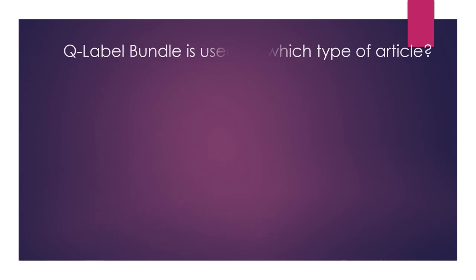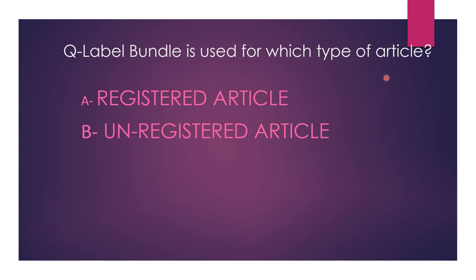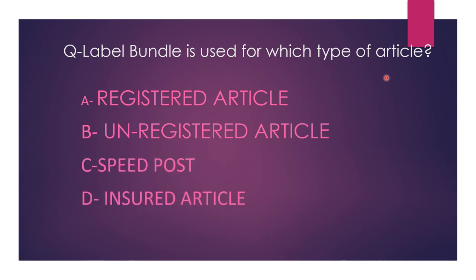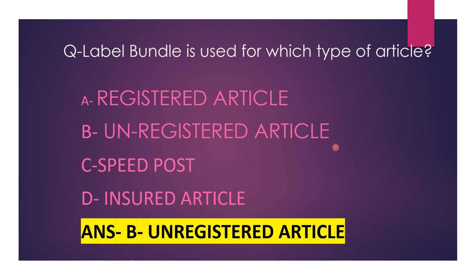Next question. Label bundle is used for which type of article? Options: A — registered article; B — unregistered article; C — speed post; D — insured article. The correct answer is option B, unregistered article.